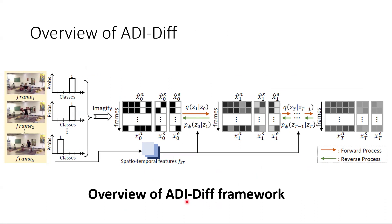Our ADIDIF framework comprises two opposite processes: the forward process and the reverse process. Specifically, in the forward process, indicated in orange arrows, we aim to generate supervisory signals of intermediate steps during training through progressively adding noise to the ground truth AD images. Conversely, the reverse process, indicated in green arrows, aims to learn to reverse the forward process — basically, it learns to denoise and produce high-quality AD images from random noise, and this is the main part of our action detection pipeline.